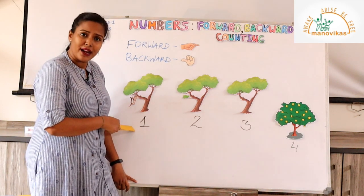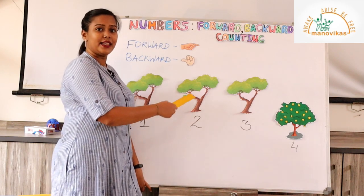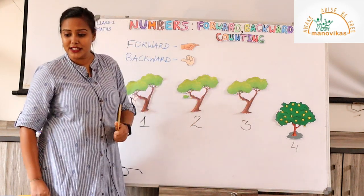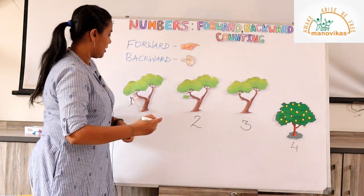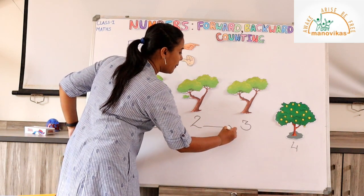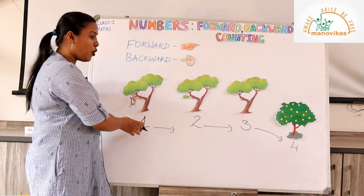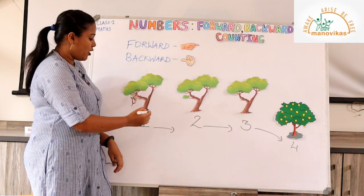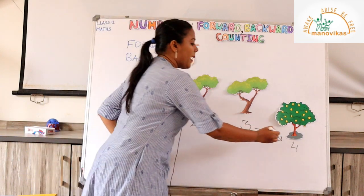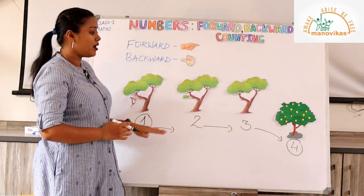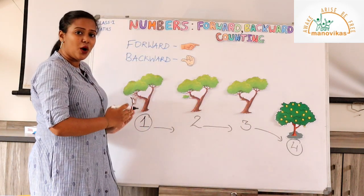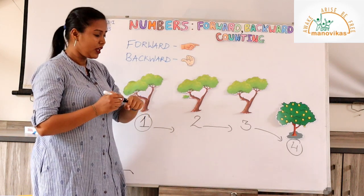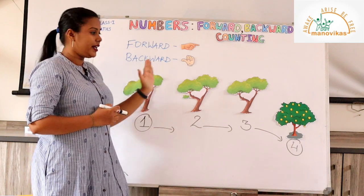Students, if you noticed carefully, the monkey was first on tree number 1, then he moved to tree number 2, then tree number 3, and finally tree number 4 where he found all the fruits. When we count from a smaller number to a bigger number — in this case 1 is the smaller number and 4 is the bigger number — we call it forward counting.